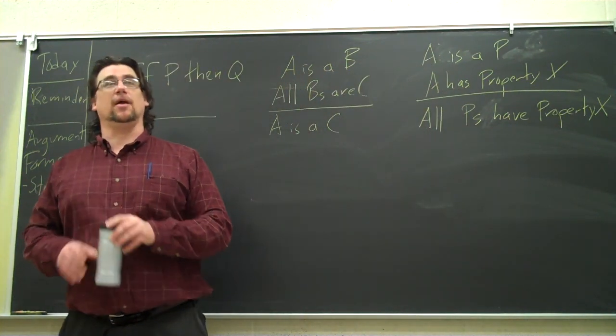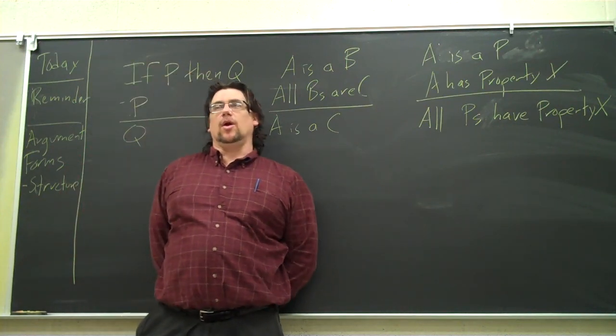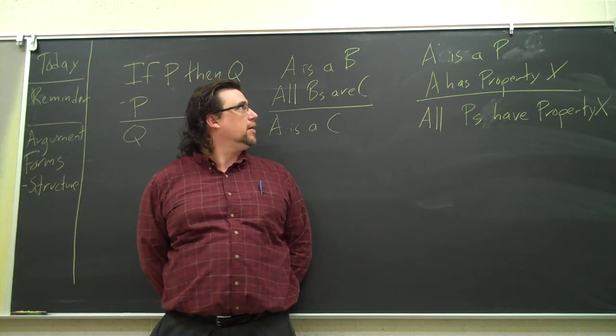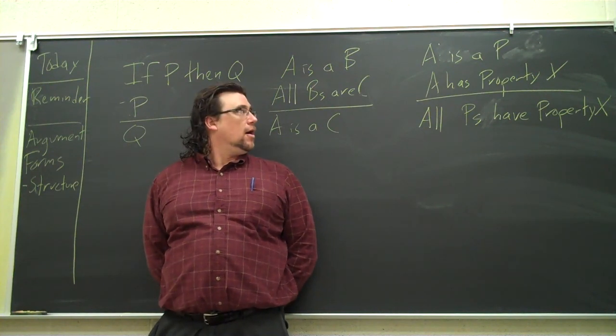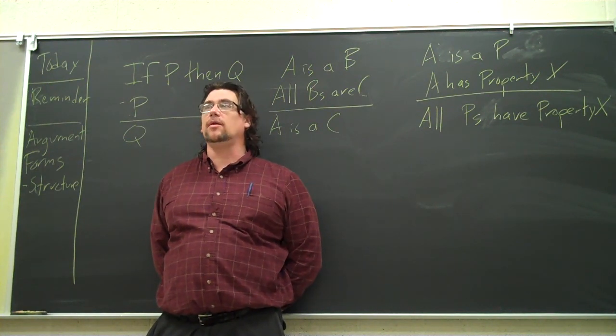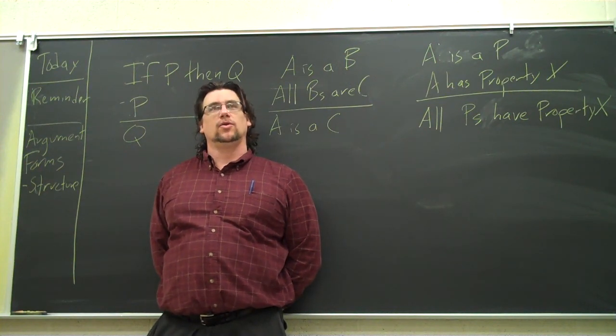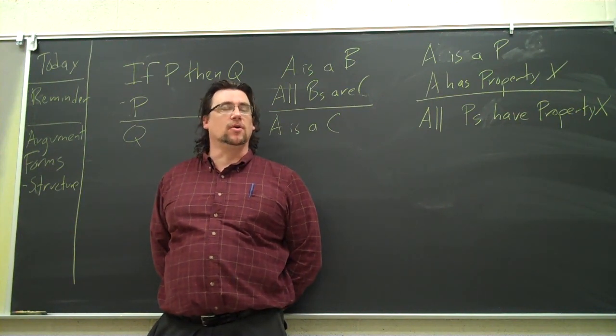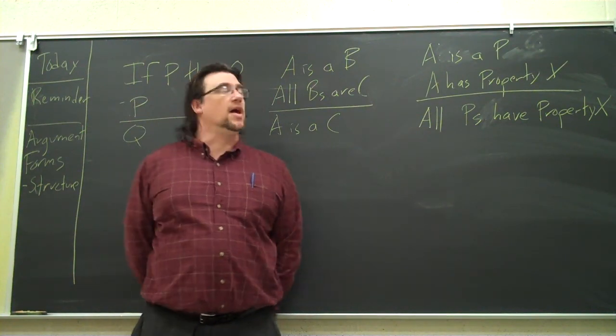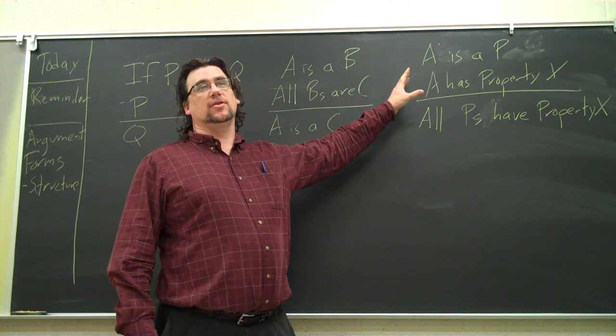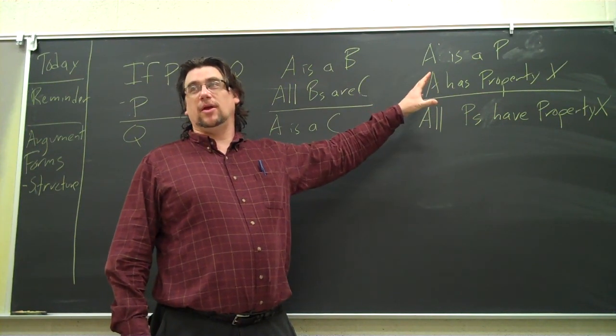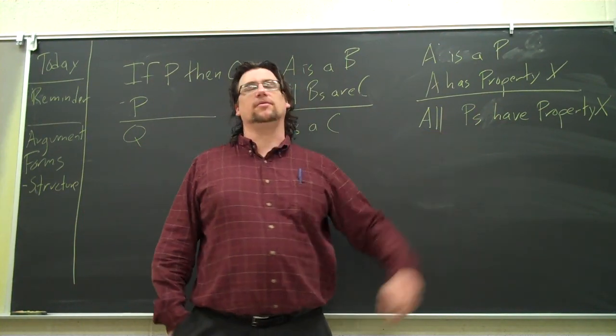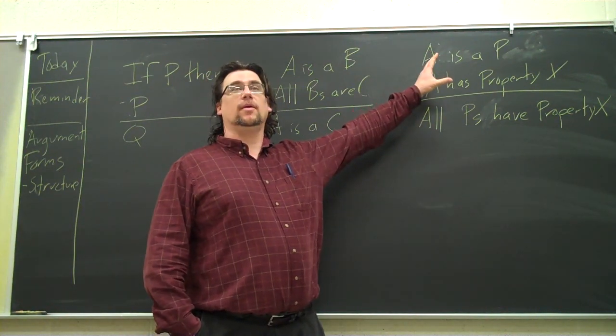If you look at this, this is actually an inductive argument. This is the argument from example. This is a kind of bad argument that we make quite frequently. A is a P. A is in the group P. A has property X. All Ps have property X. So we go from one member of a group or one member of a class to generalizing about the entire group. This is often called argument from example. It's not a good form of argument. This is not deductive.